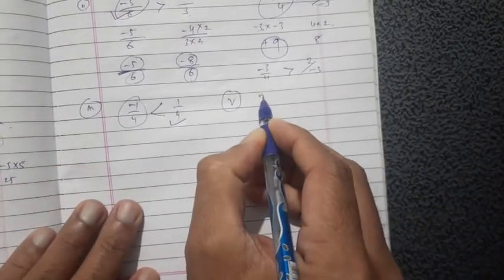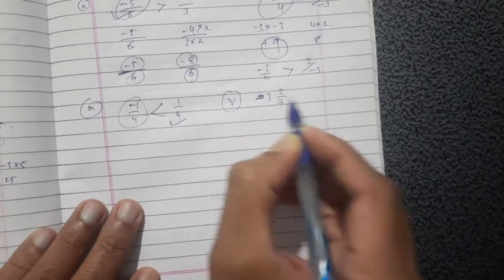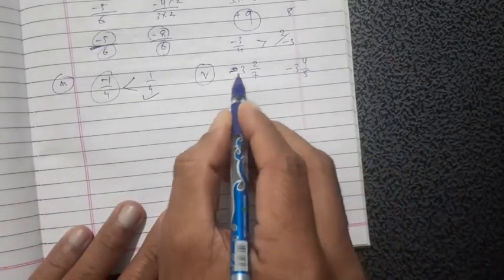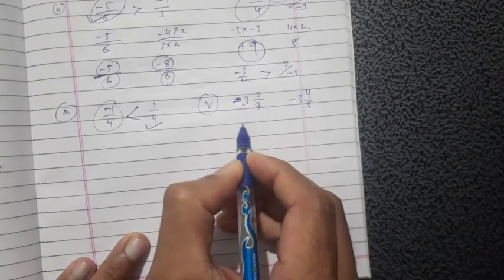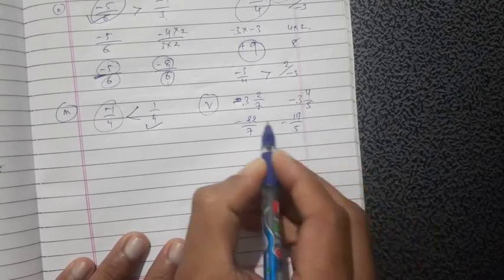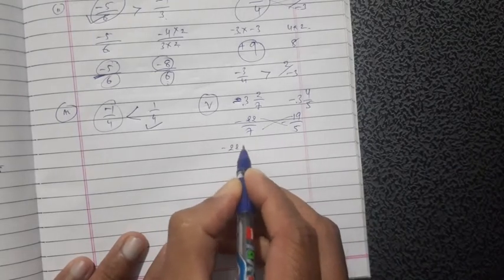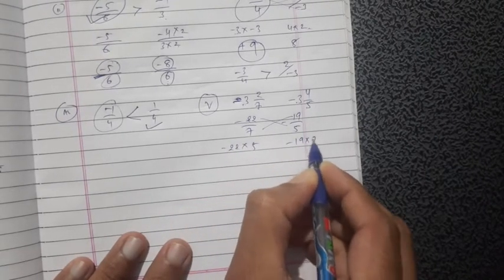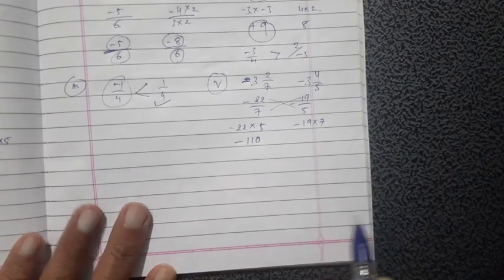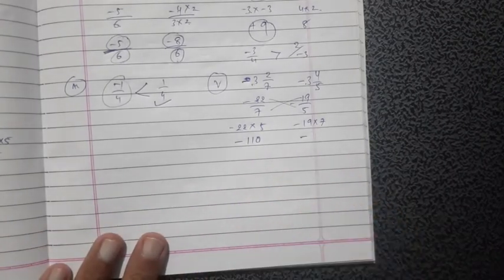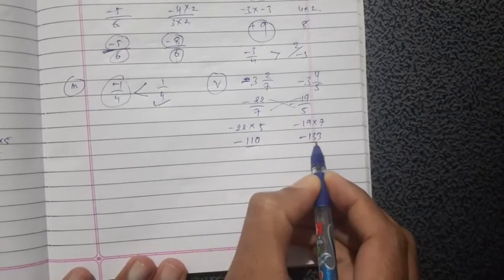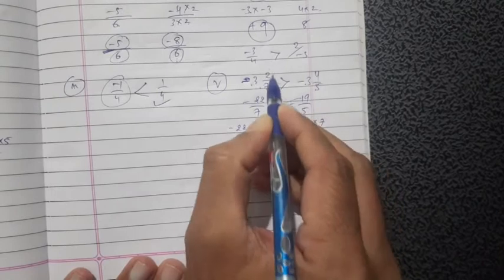Fifth one: minus 3 and 2 upon 7 (mixed number) and minus 3 and 4 upon 5 (mixed number). Convert to rational form: 7 threes are 21 plus 2 gives minus 22 upon 7, and 5 threes are 15 plus 4 gives minus 19 upon 5. Cross multiply: minus 22 into 5 is minus 110, and minus 19 into 7 is minus 133. Since minus 110 is greater than minus 133, the first number, minus 3 and 2 upon 7, is greater.